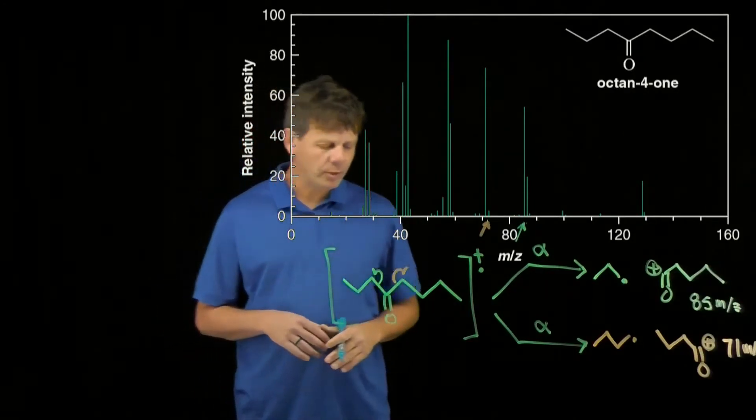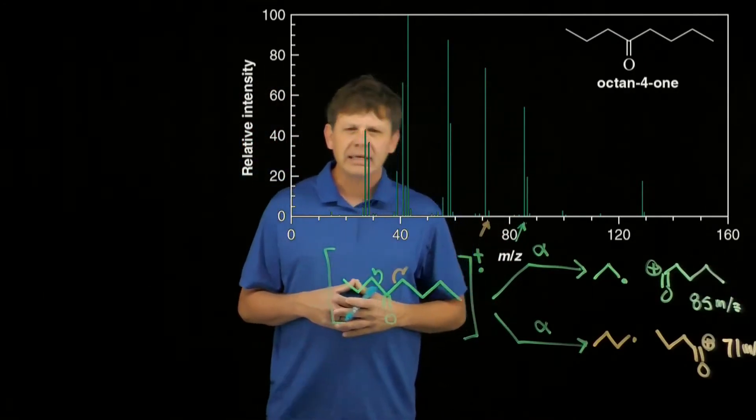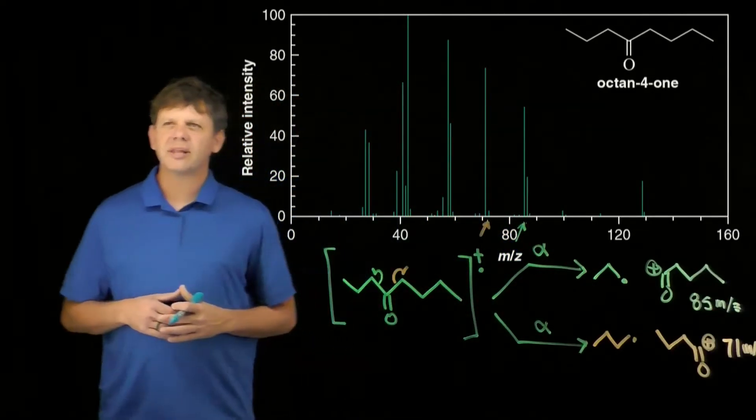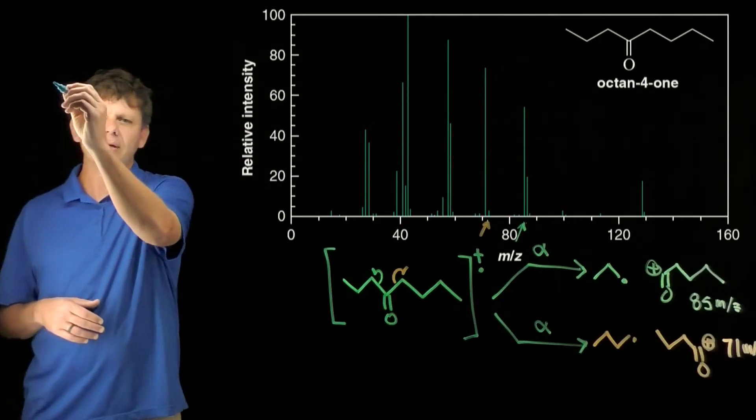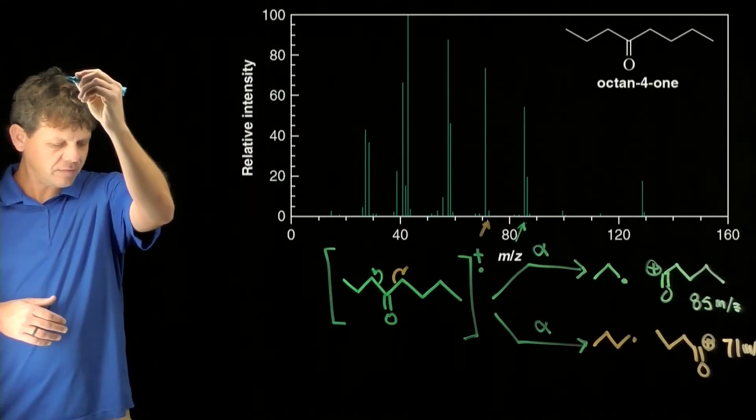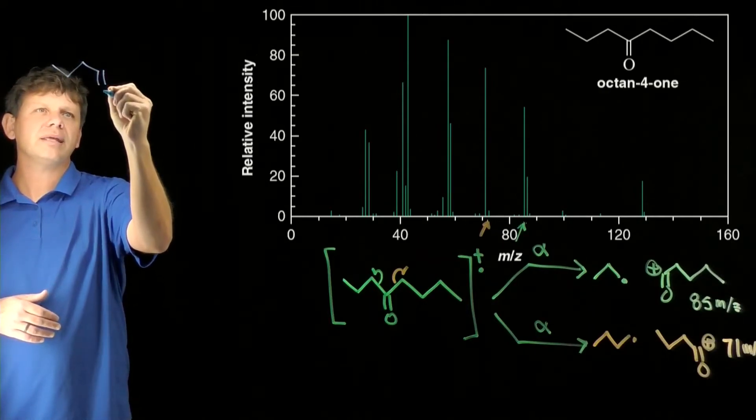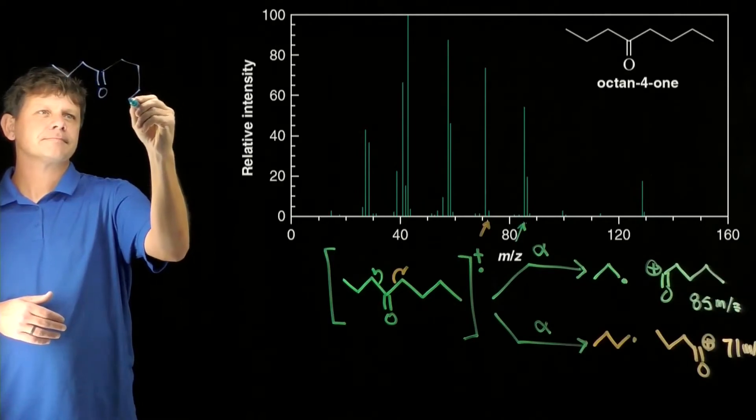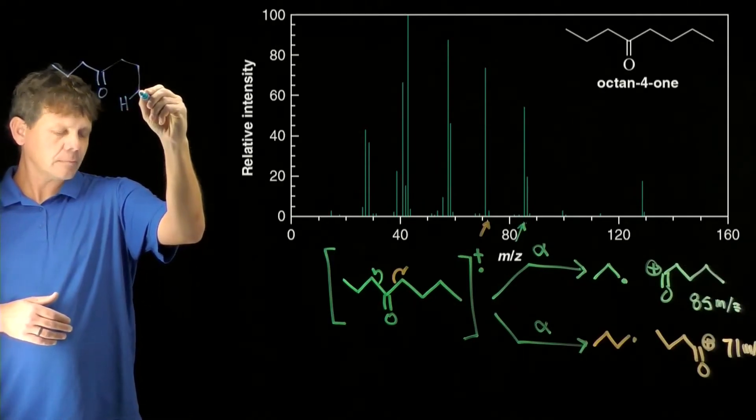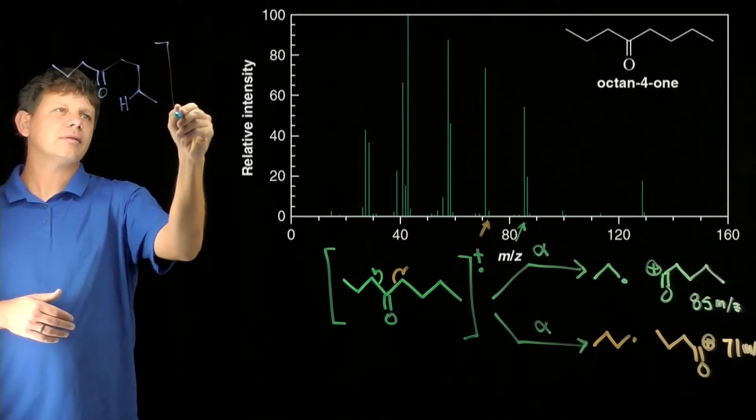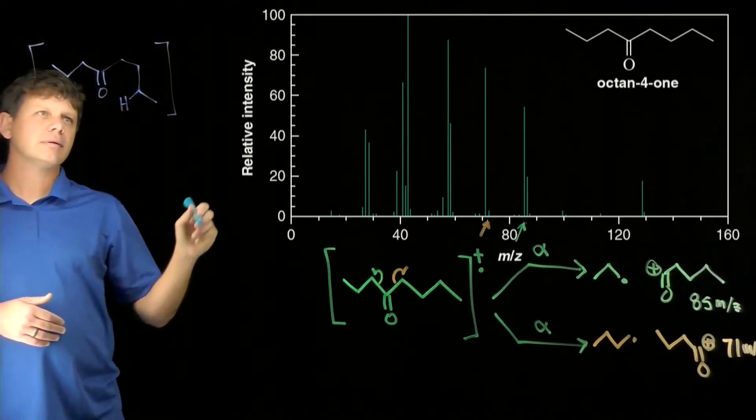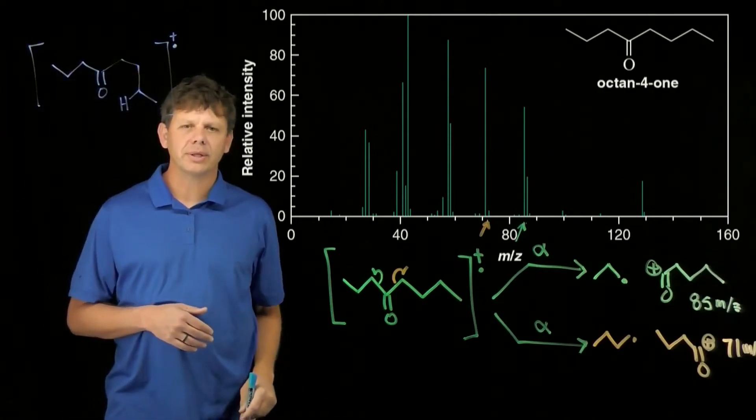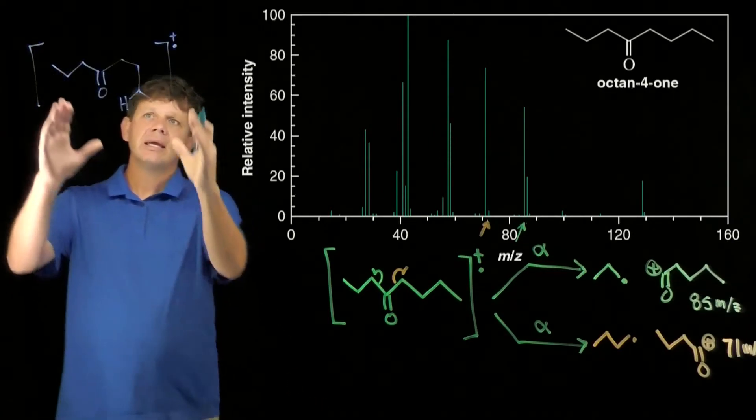The last one that we're going to do, and this is again bonus coverage, is the McClafferty rearrangement. And so that's going to require us to redraw the molecule in a slightly different way. So we'll do this over here, hoping to save, hoping to have enough space. We'll draw the starting octanone in this way so that we can see the conformation that's going to be required for showing this. I need to get a little more ink. We draw it this way.